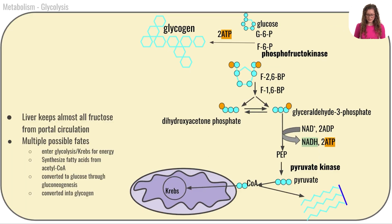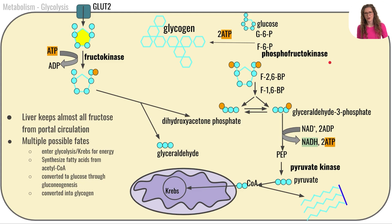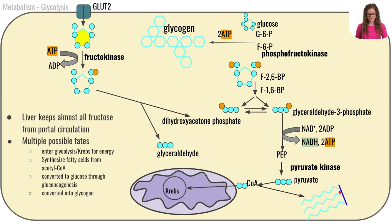Now let's take a closer look at fructose. Fructose is absorbed, gets trapped in the cell, and can enter glycolysis after the heavily regulated phosphofructokinase step. From there, fructose has a few different possible pathways: it can continue through glycolysis, where the resulting acetyl-CoA can enter the Krebs cycle to generate ATP, go toward lipogenesis to form triglycerides and fatty acids, or fructose can ultimately be turned into glucose through gluconeogenesis.